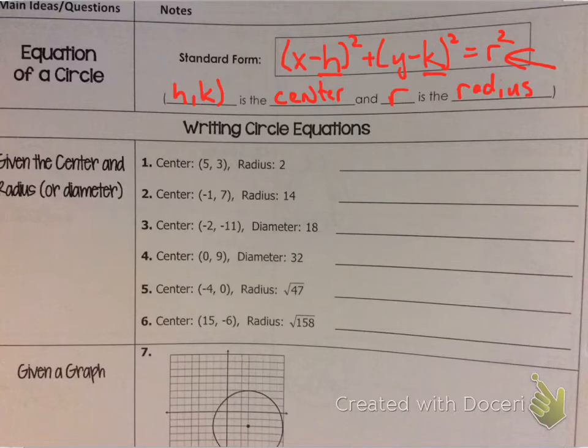Also keep in mind that, if you see something like, say here, x minus 3 squared, that's going to mean positive 3. So just kind of think opposite. Whatever you see in the parentheses, think opposite. So if we have this here as center (5, 3) with a radius 2, I can go, all right.